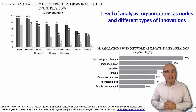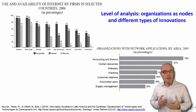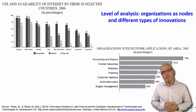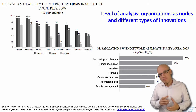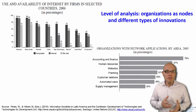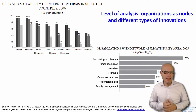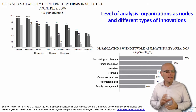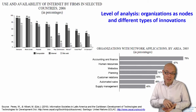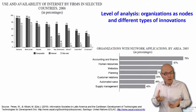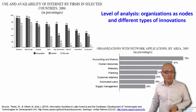Here you see the digital divide among companies — these are firms and organizations, and you see different technologies that are measured: computers, internet, websites, and different applications they are using. It gives insights on the digital divide where the subject is not countries, not individuals, but organizations or firms.